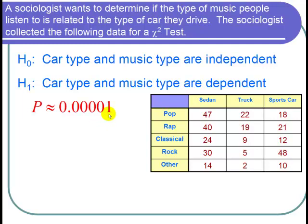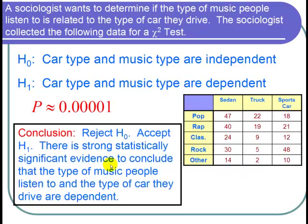Smaller than any level of significance you could even imagine. So I can state my conclusion. Because the p-value, being really small, smaller than any alpha, means I reject H₀ and accept H₁. And I can conclude that there is strong statistically significant evidence to conclude that the type of music people listen to and the type of car they drive are dependent.